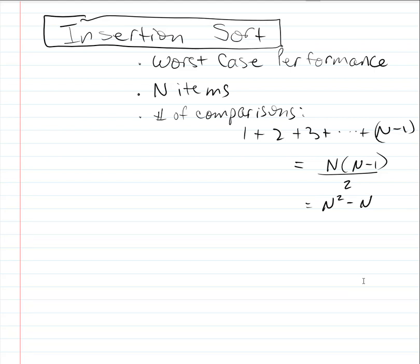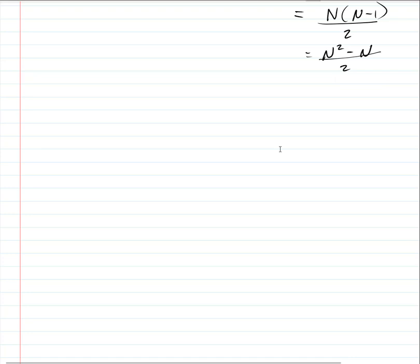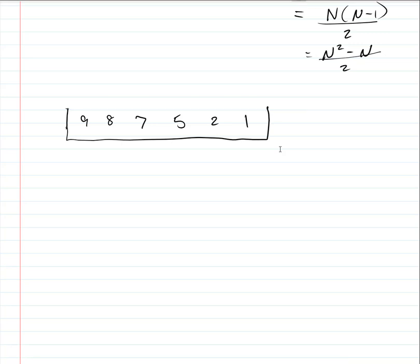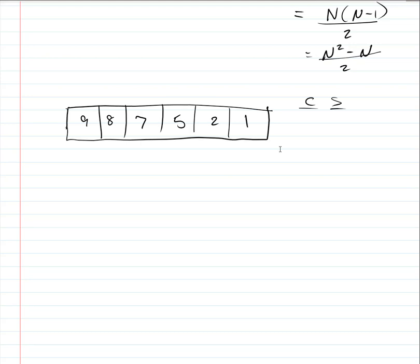Let's dig into this. Say we have an array with a nine, an eight, a seven, a five, a two, and a one. I want to do the analysis we've done before and get a count of the number of comparisons and swaps associated with this sequence. The items are indexed one through five, so we have six items in our array.